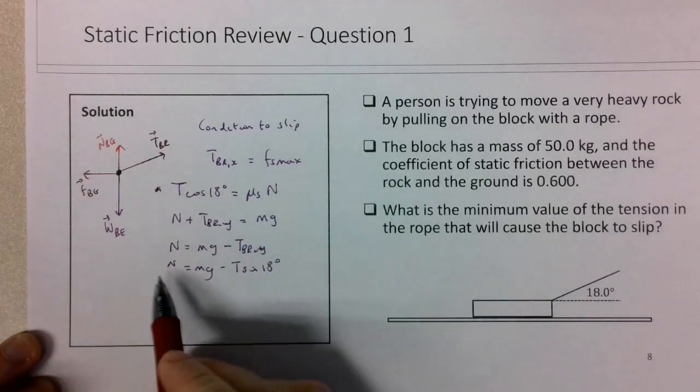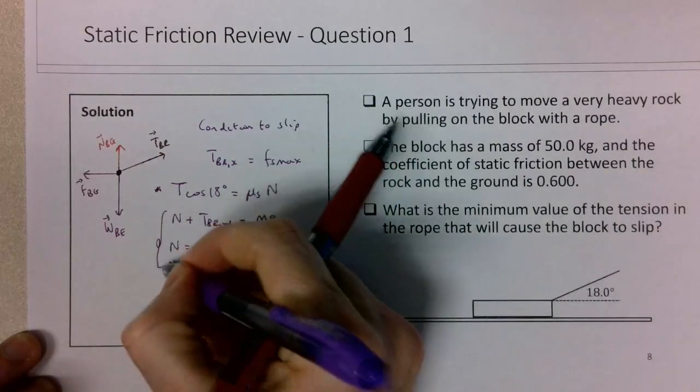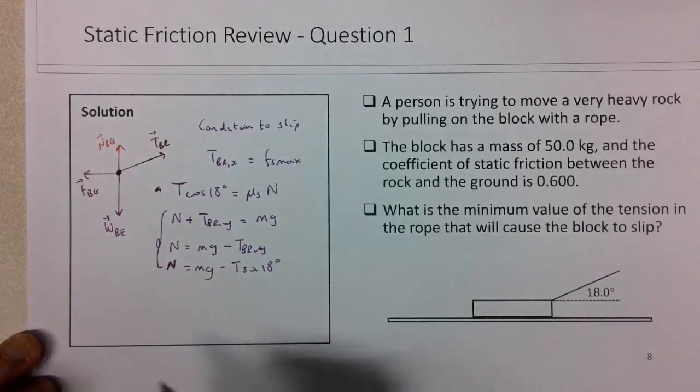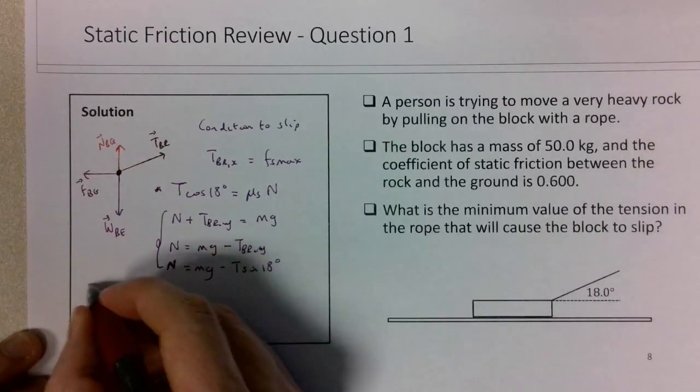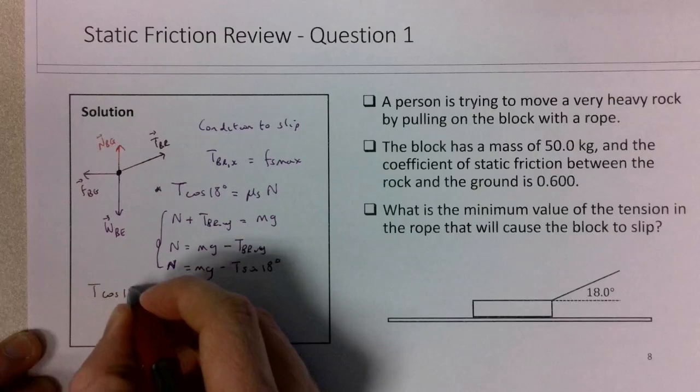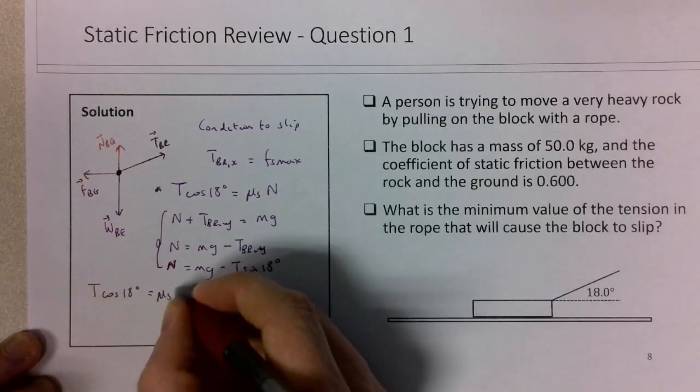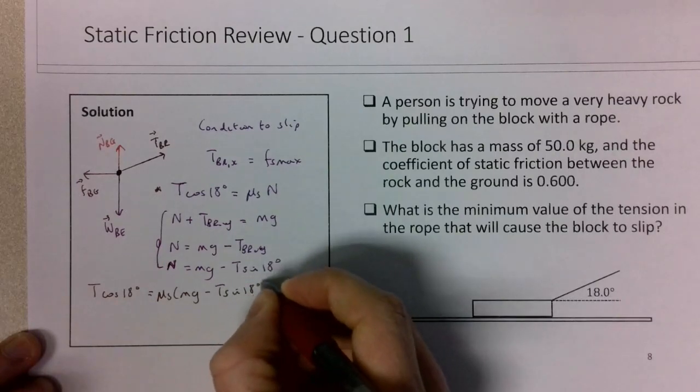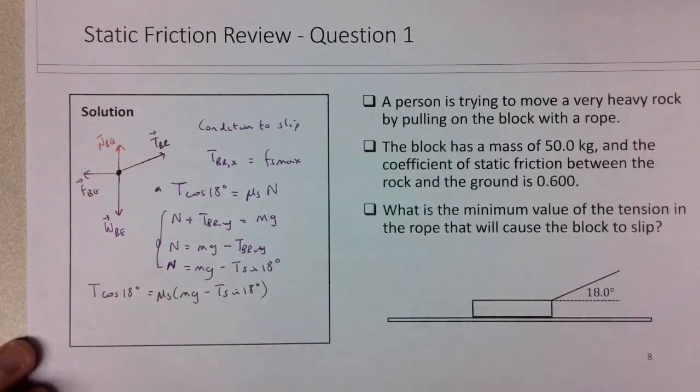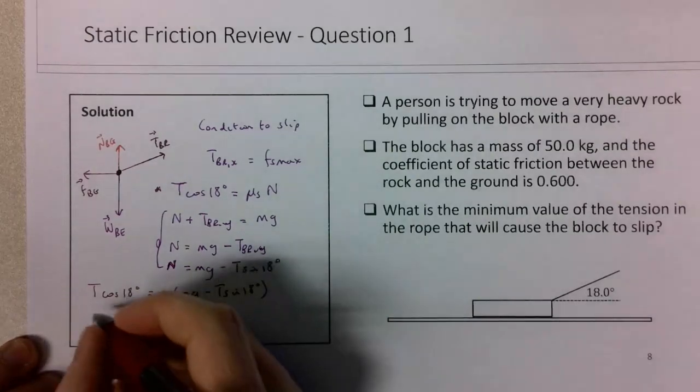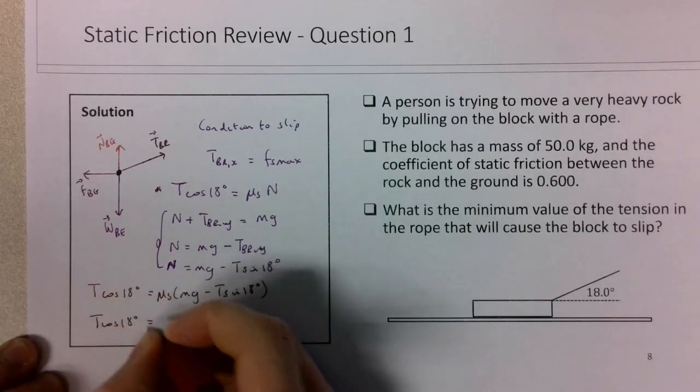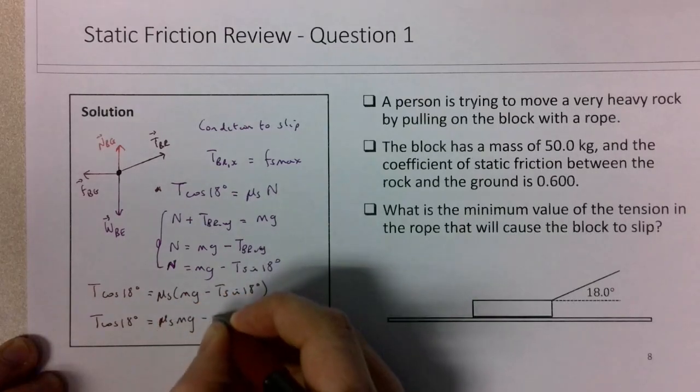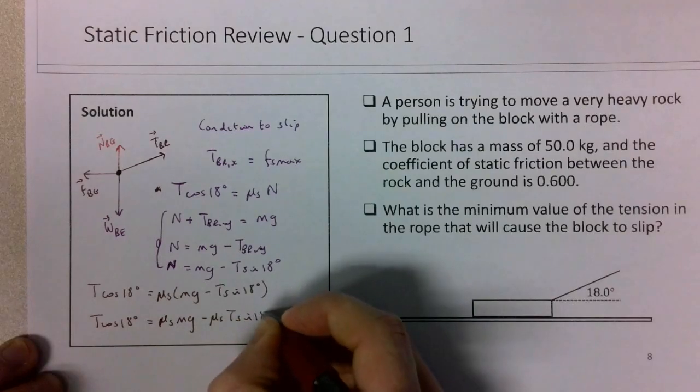I'm plugging our work in here for the normal. So let's put these sort of together. And then we can sort of do our algebra. So we have T cosine of 18 is equal to μ_s times mg minus T sine of 18. And we're going to have to get that T on its own. We're going to have to isolate that T.